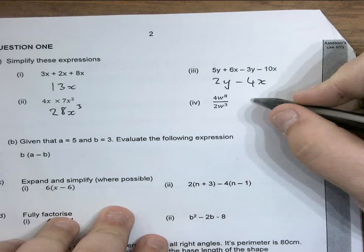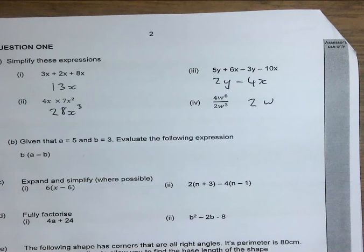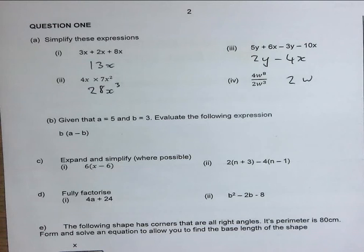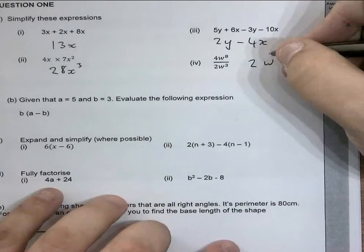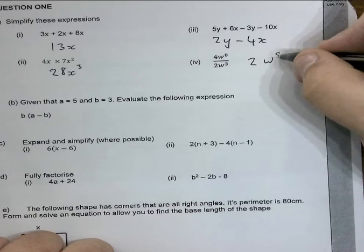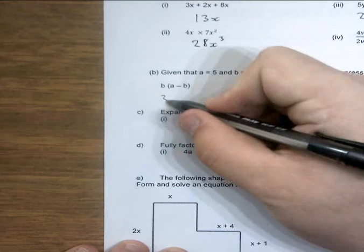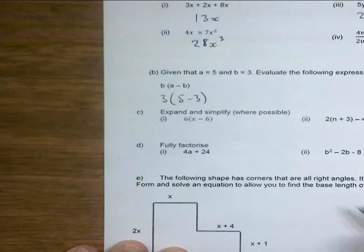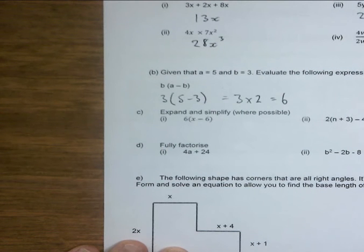Divide by 4, divide by 2 is 2. When we divide, what do we do with the powers? We subtract. So I'm going to do this in two steps — put the numbers in first, then work it out. That's going to be 3 times 2 equals 6, and 5 minus 3 is 2.